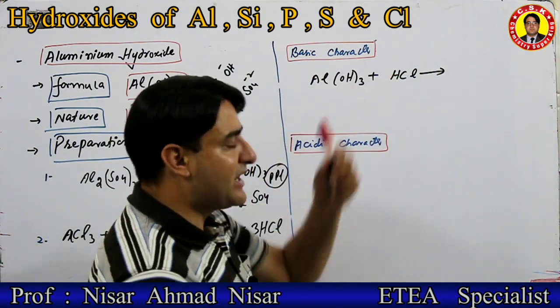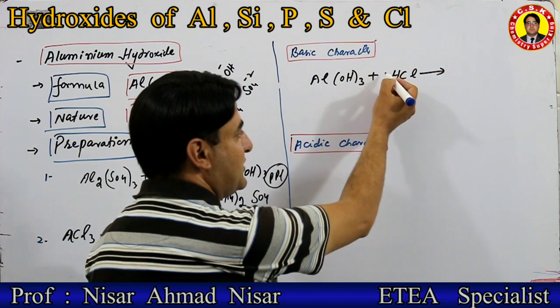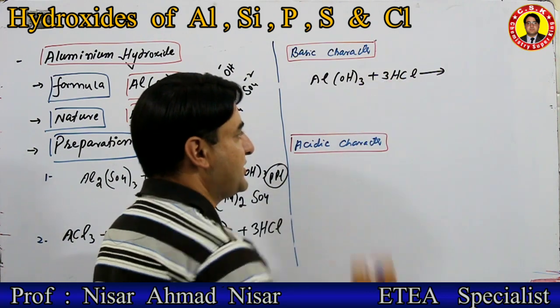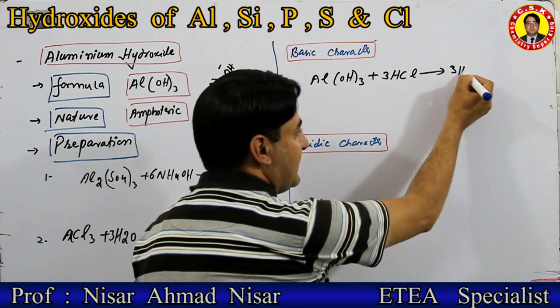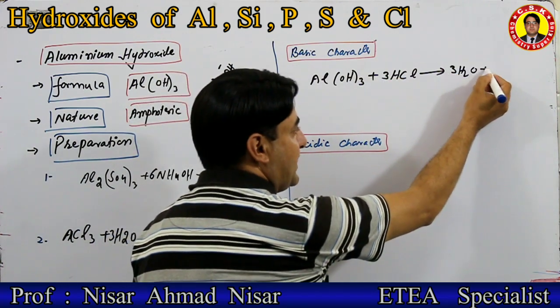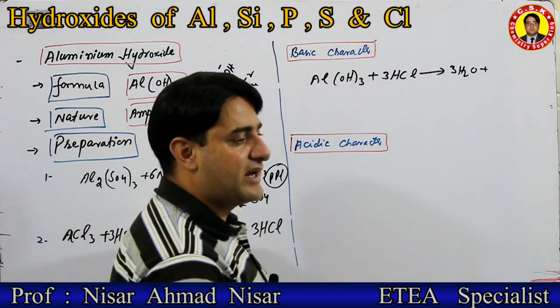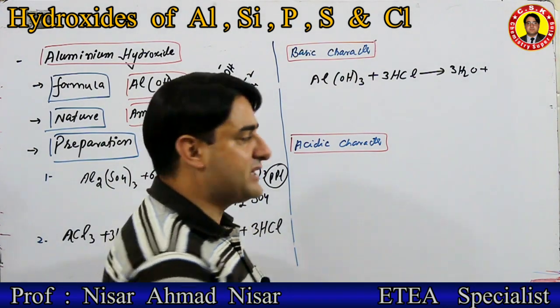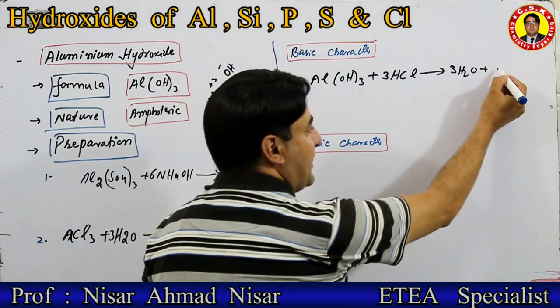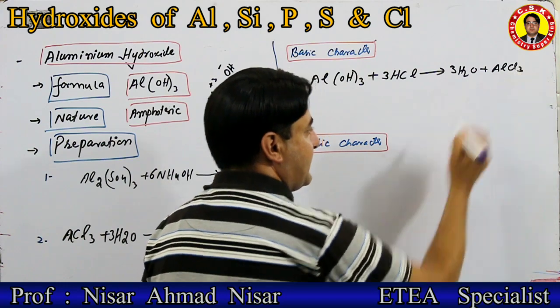Al(OH)₃ کا hydroxide HCl کے hydrogen سے ملکر water بنائے گا — 3 hydroxide ہیں تو 3 water بن جائیں گے۔ Chlorine ملے گا aluminium کے ساتھ — aluminium کی valency plus 3، chlorine کی minus 1 — تو AlCl₃ بن جائے گا۔